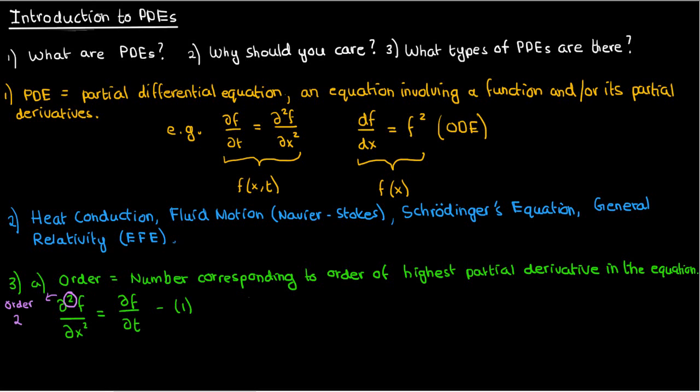Now don't get confused if there's a mixed partial derivative, just follow the same logic. So in this example, where we have d³f/dx²dy equals df/dt, the highest partial derivative term has our function f being differentiated three times, so this PDE would be an order 3 PDE.